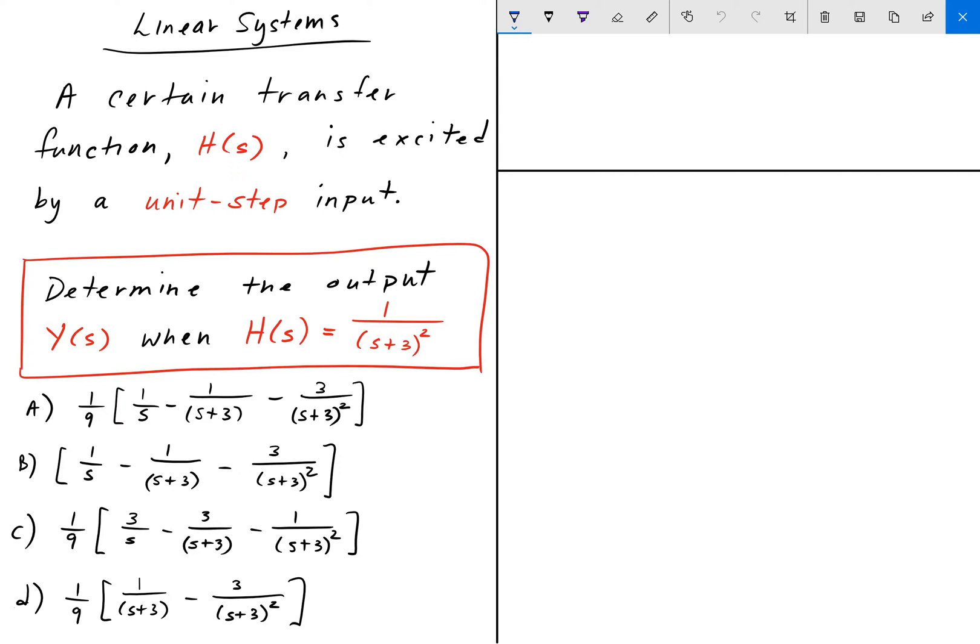So, to solve this, we need to know that for any LTI system, linear time invariant, the output Y(s) in the Laplace domain is equal to H(s) times the input X(s). If we were given this in the time domain, then we would do a convolution integral. But because we have it in the Laplace domain, we simply just multiply them together.